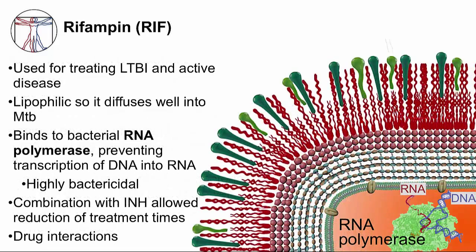Next is rifampin, another very important antibiotic against TB. Like isoniazid, it can be used for treating both LTBI and active TB disease. It is lipophilic, so it diffuses well into MTB. Its mechanism of action is to bind to bacterial RNA polymerase, preventing transcription of DNA into RNA. It is highly bactericidal, and the combination of rifampin and isoniazid has enabled reduction in the duration of therapy. The biggest issue with rifampin is its adverse interactions with other drugs.